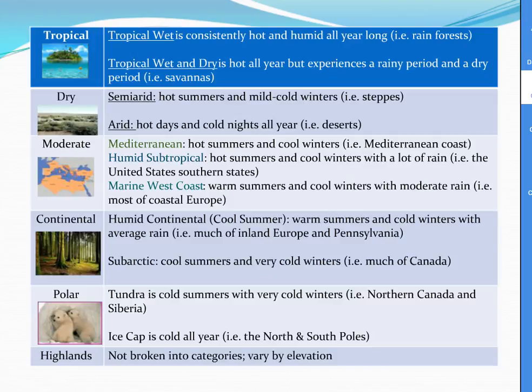In the continental climate region, we have a humid continental type and a sub-arctic type. Humid continental areas have warm summers and cold winters with average rain — much of inland Europe and Pennsylvania are examples. Sub-arctic regions have cool summers and very cold winters, which is true of most of Canada. In the polar regions, you have the tundra and the ice cap. In the tundra, winters are even colder than the summers, which are already cold — think northern Canada and Siberia. The ice cap is simply cold and frozen year-round, like the North and South Poles. Highlands aren't broken into categories because conditions vary by elevation.